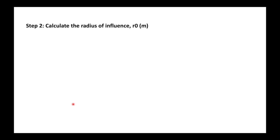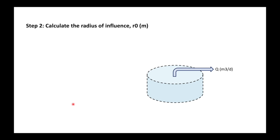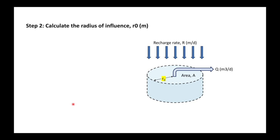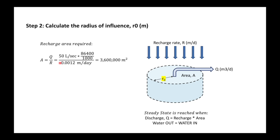The next step is to calculate the radius of influence. We have a circular piece of aquifer with our well in the middle pumping away and recharge from irrigation entering from above. Under steady state conditions our discharge from the well must equal the recharge times the area. Dividing discharge by recharge rate — correcting for seconds per day and liters to cubic meters — gives an area of 3.6 million square meters.